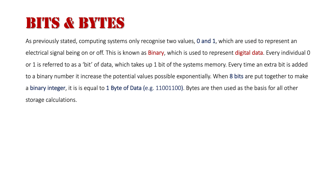Now every time an extra bit is added to a binary number, it increases the potential values possible exponentially. When we have eight of these bits next to each other within one binary integer, it is equal to one byte of data — eight bits make a byte.